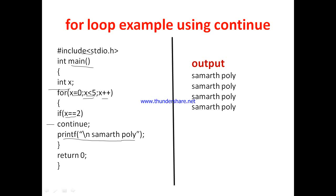For x = 0: the condition x == 2 is false, so continue is not executed and printf executes — 'Samartha Poly' is printed. Remember, when if has no curly braces, it considers only one statement in its body, so continue is the only statement inside the if. For x = 1: x == 2 is false, so continue is not executed and printf executes again. For x = 2: x == 2 is true, so continue is executed — the next part (printf) is skipped.